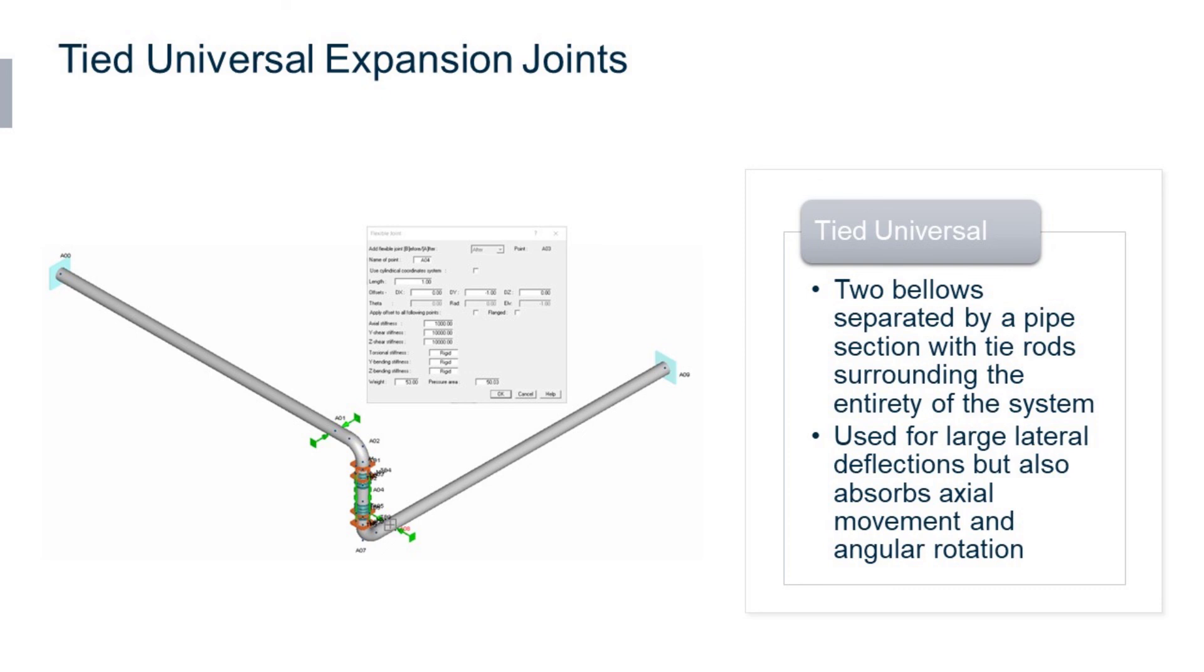The dialogue in the middle shows that this joint is generally free to move in the axial and shear directions but no bending or torsion is permitted.